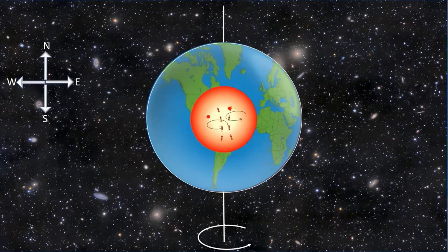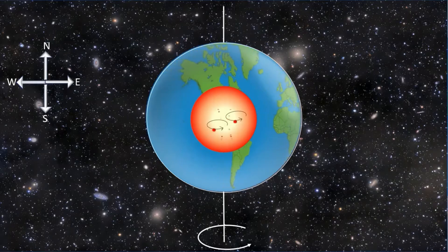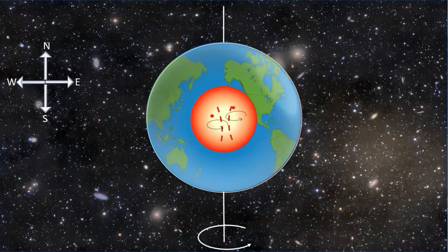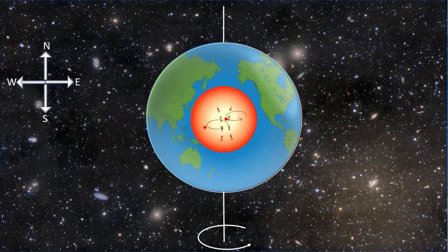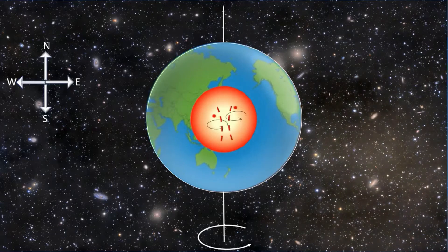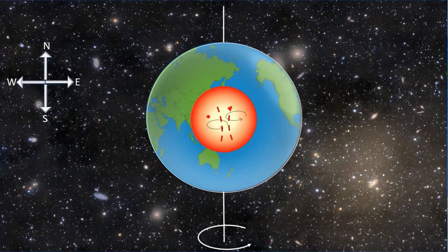Earth's magnetic field can be imagined like a bar magnet with the magnetic south pole near the Earth's geographic north pole and the other magnetic north pole near the Earth's geographic south pole.